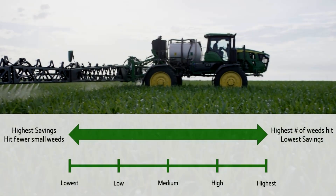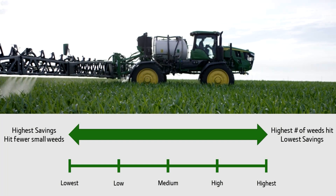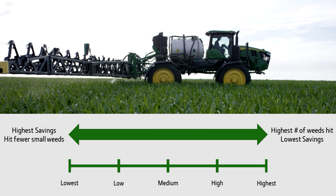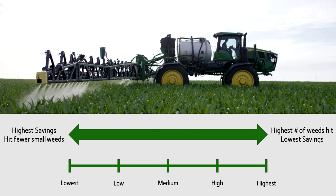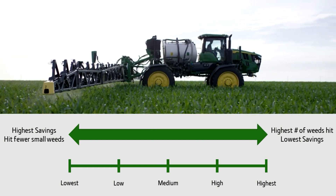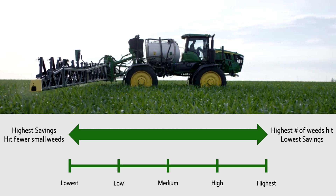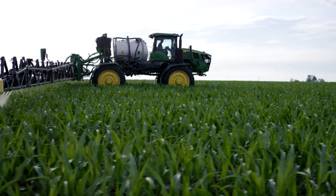Think of this setting like a confidence rating. At the lowest sensitivity, the system requires a higher level of certainty to spray a weed than at the highest sensitivity.